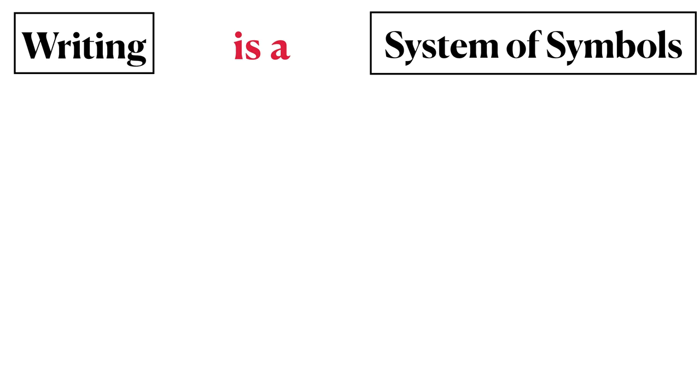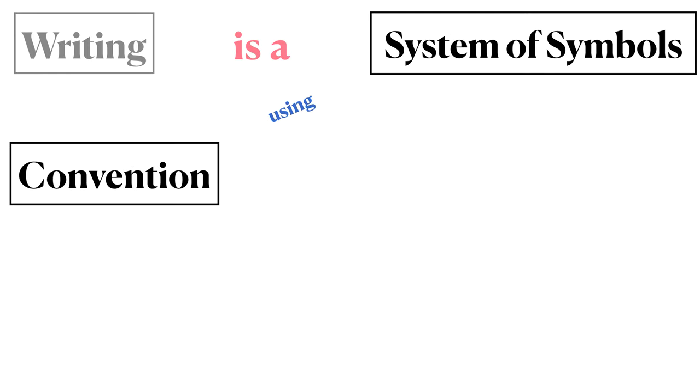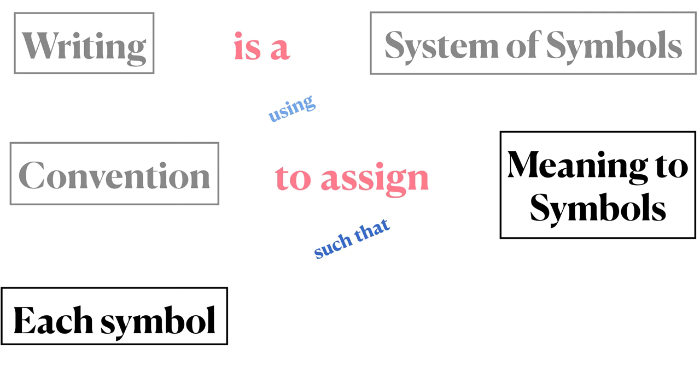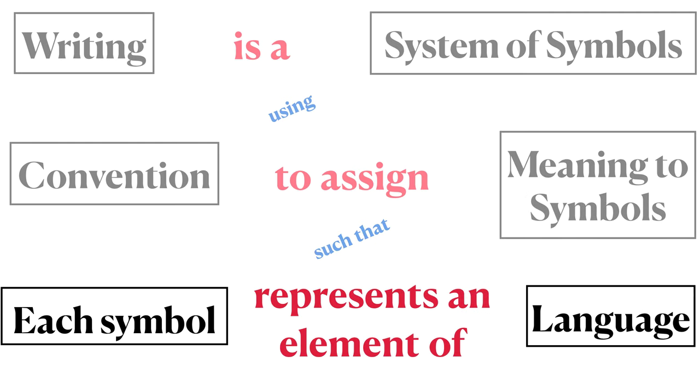So, let's put all of that together. Writing is a system of symbols, using convention to assign meaning to symbols such that each symbol represents an element of language.